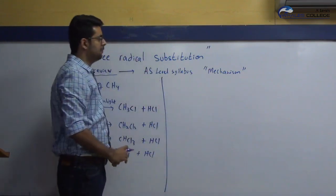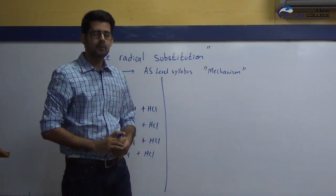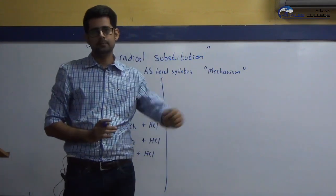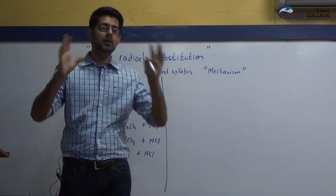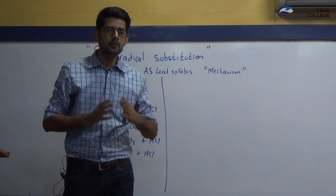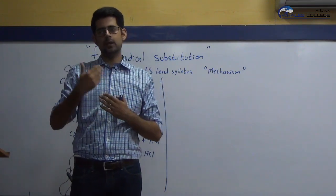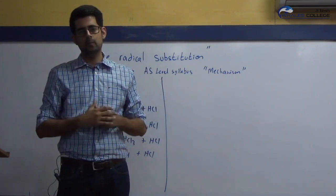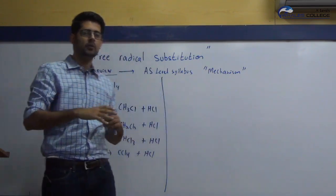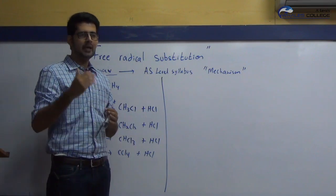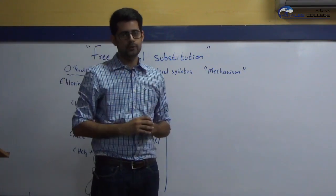Now let's begin studying the mechanism of this reaction. A mechanism highlights how things work between atoms and molecules — their collisions, which atom is colliding with which molecule or atom, what types of reactions are taking place, and all the steps involved that lead to the overall reaction. So a mechanism is a detailed breakdown of the overall equation.